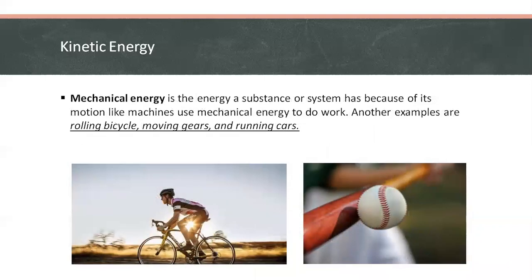And lastly, we have mechanical energy, which is the energy a substance or system has because of its motion, like machines. So examples are air, rolling bicycles, moving gears, and running cars. And take note of this. Mechanical energy can be placed in two forms, either kinetic or potential energy.